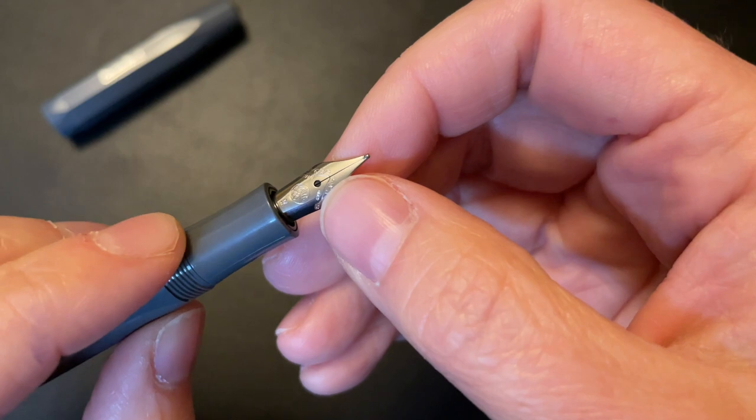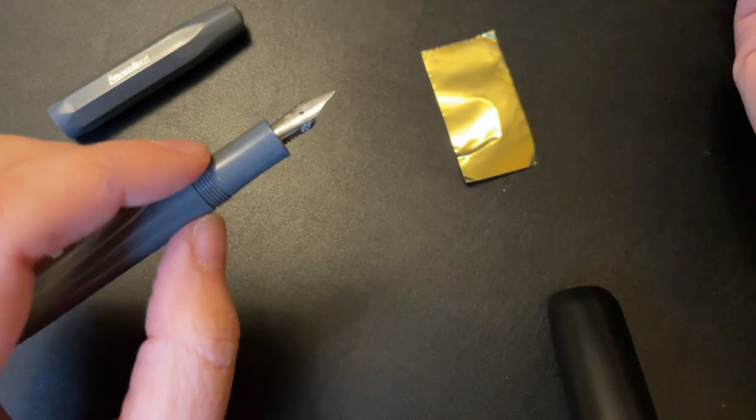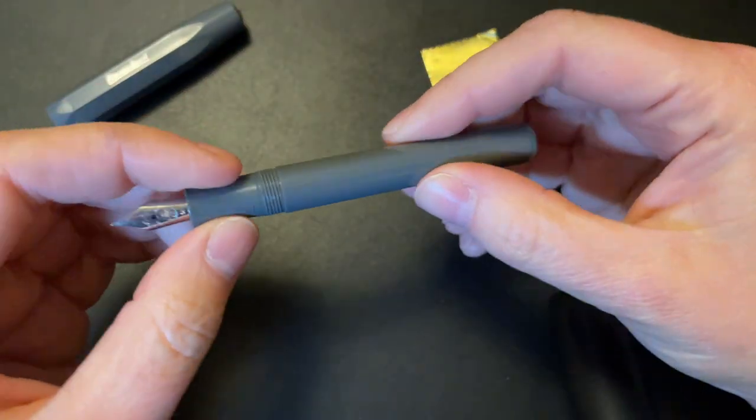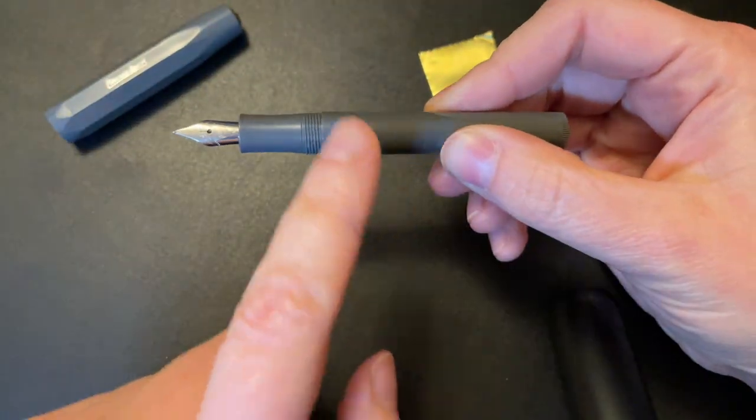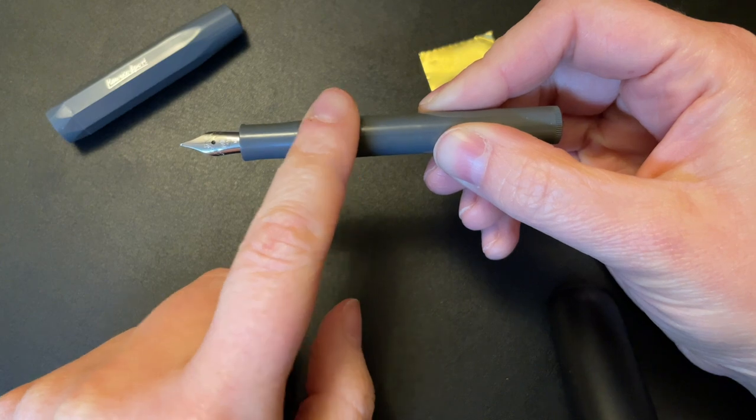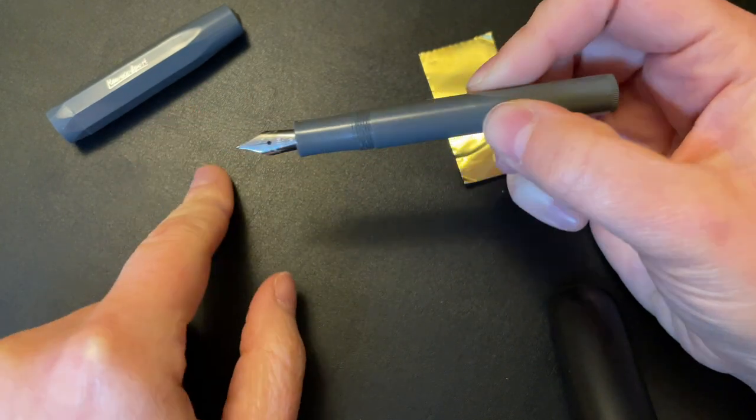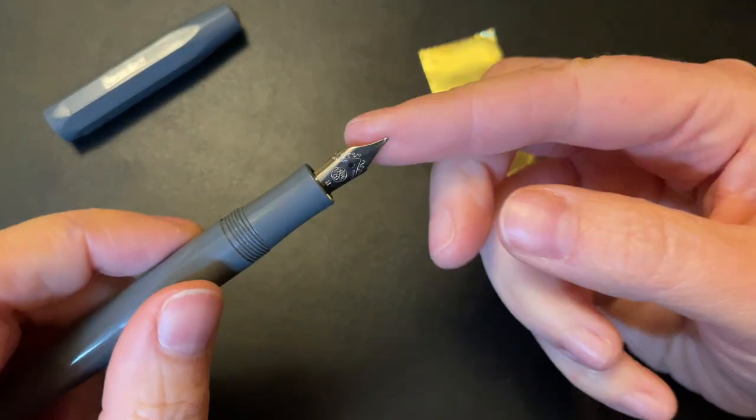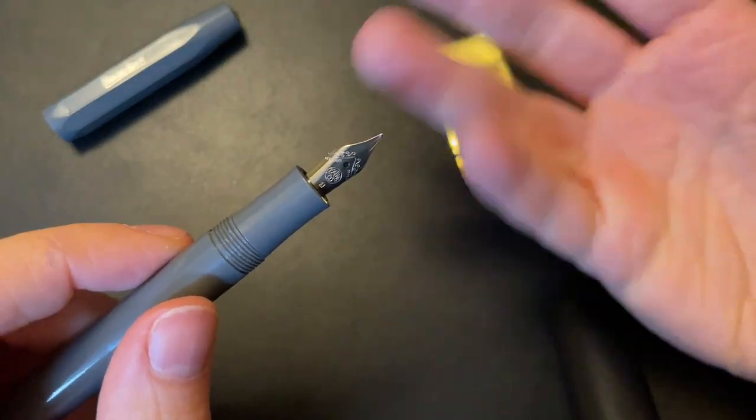But you shouldn't have to, and that's literally all that I do. It's nothing magical. It's just increasing the amount of ink that can get from the body into the feed and then onto the paper. So when you do increase the flow, you do then increase the line width.